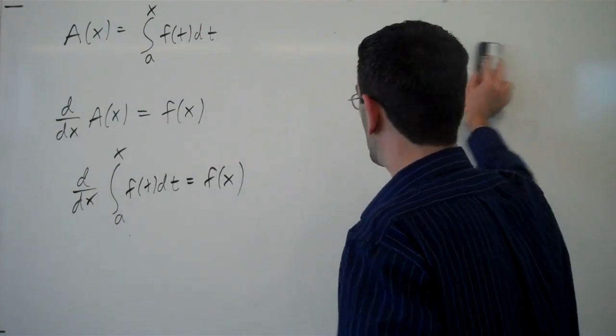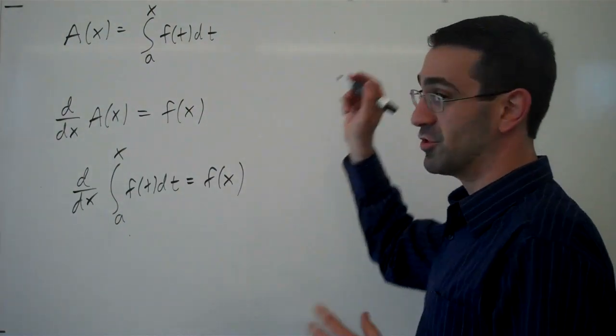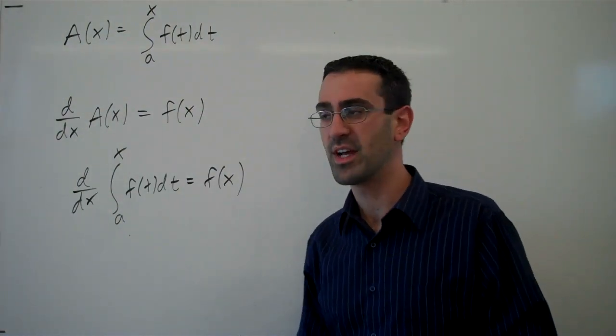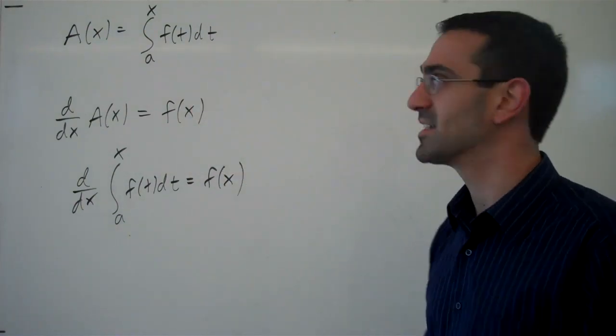Now, in a simple case, we can show this pretty easily. So let's assume, and this is a big assumption, this is a very limited proof, but let's assume that f(t) has an antiderivative.